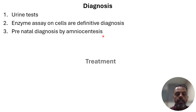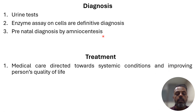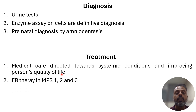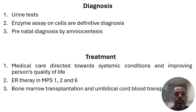Treatment is generally directed towards symptomatic management and improving the person's quality of life. Medical care is directed towards systematic condition management. Enzyme replacement therapy is also available for mucopolysaccharidosis types 1, 2, and 6. Bone marrow transplantation is also available.